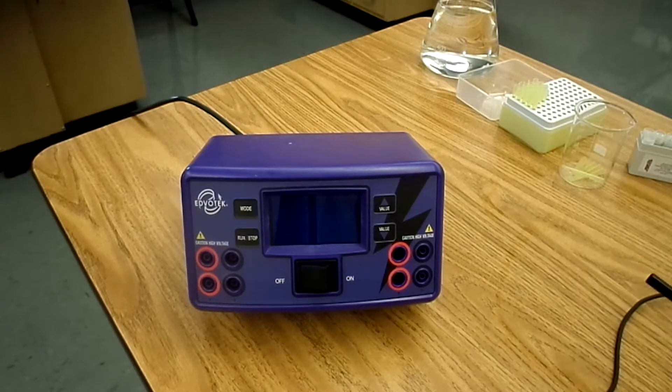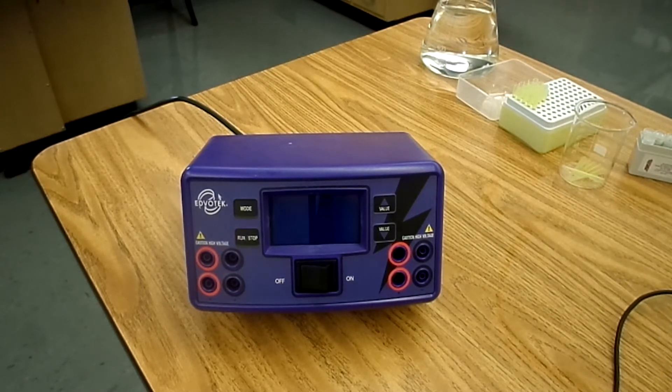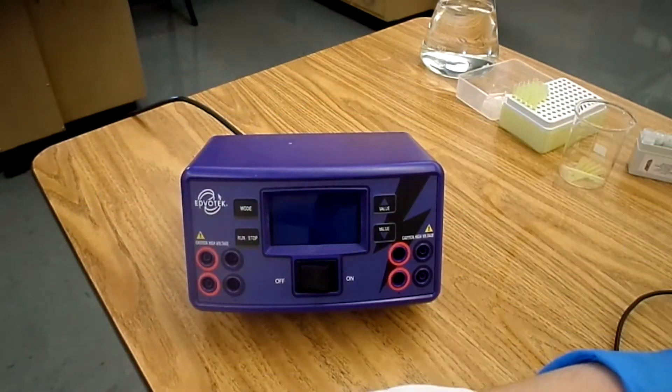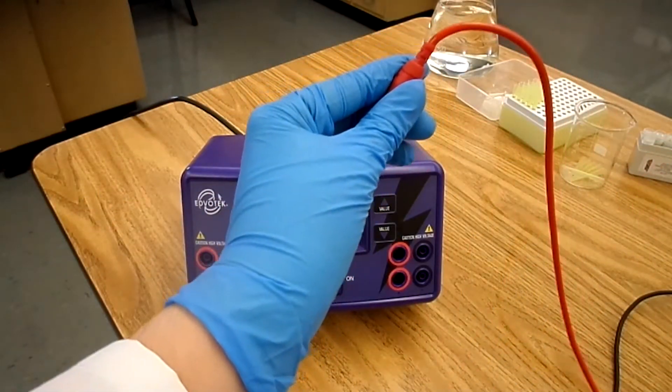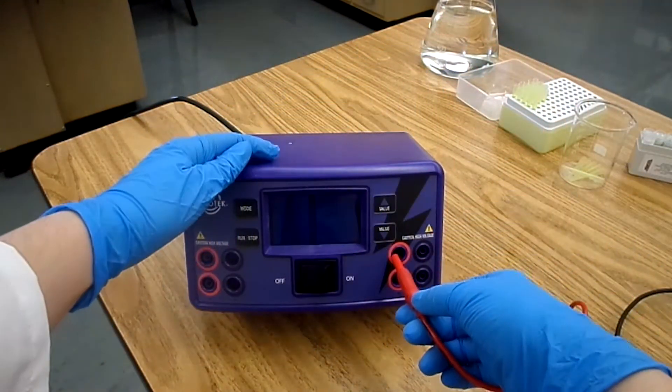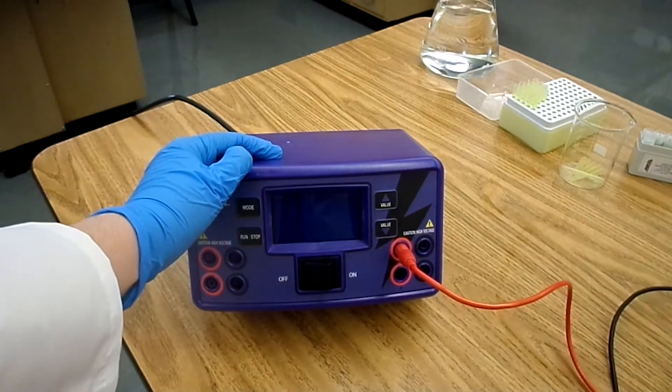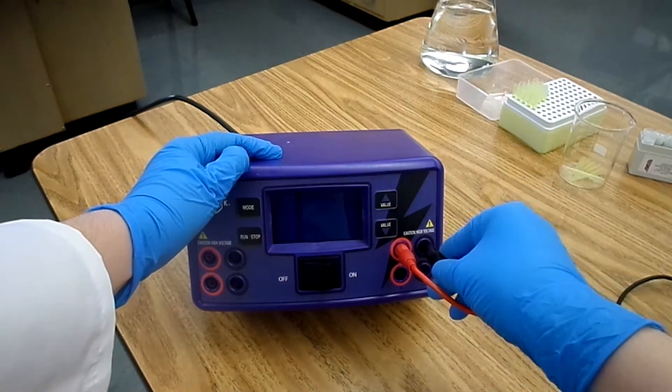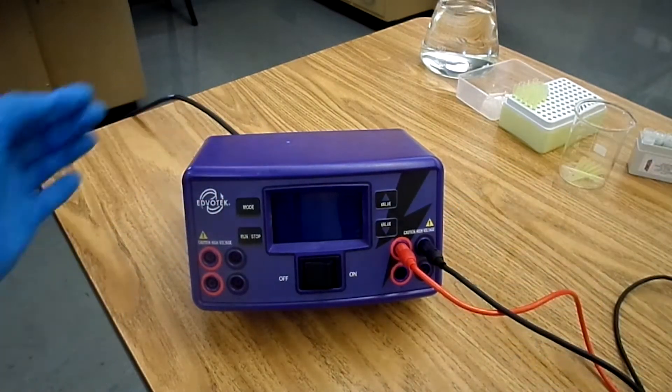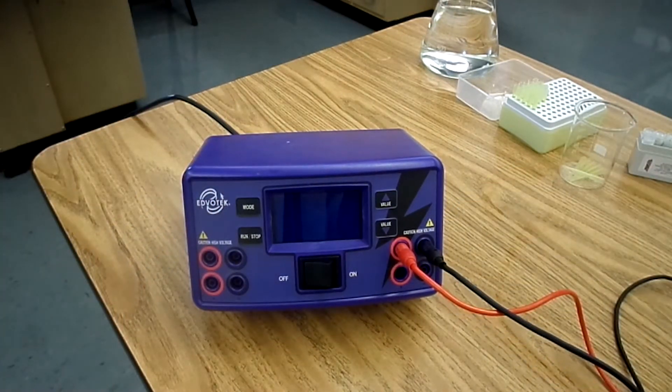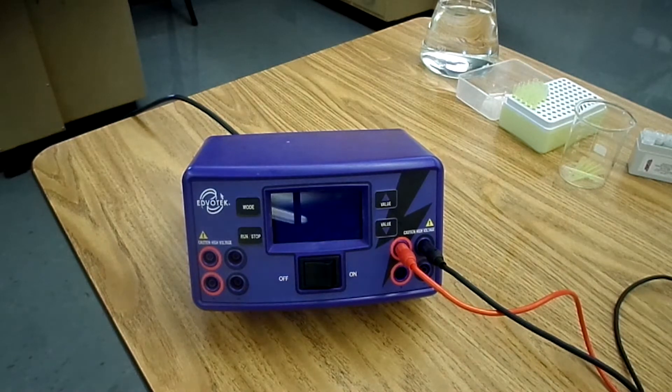Now we're going to plug the other ends of the top of the gel electrophoresis chamber into here. So we'll start with the red, and then do the black. And then we will plug in our power source.